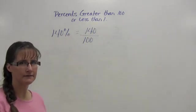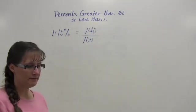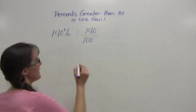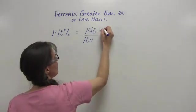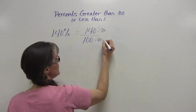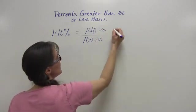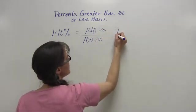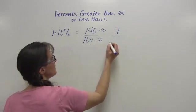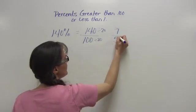Well, this can be simplified. And I can simplify it by dividing it by 20. Whatever I do to the numerator, I must also do to the denominator. Well, 20 will go into 140 seven times. 20 will go into 100 five times.